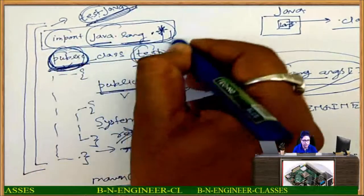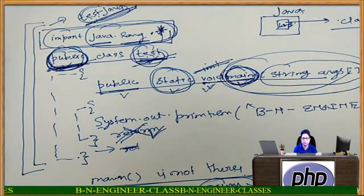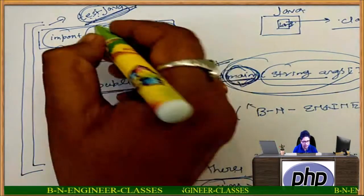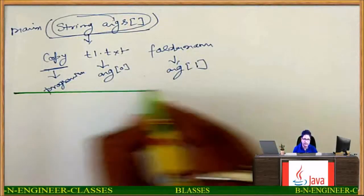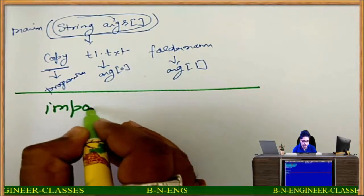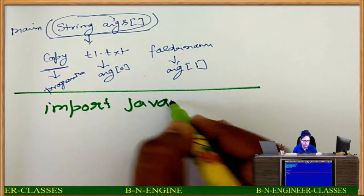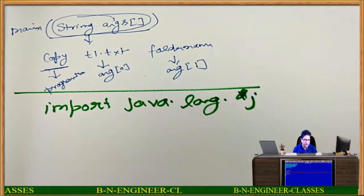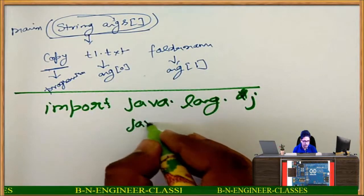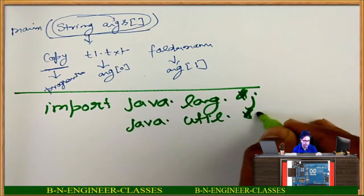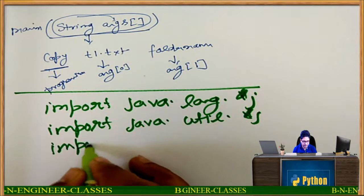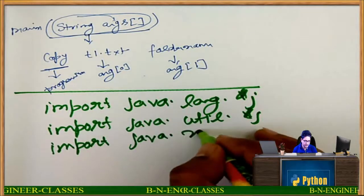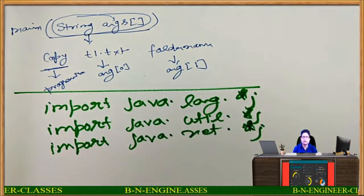Last time I told you that you have to write the statement: import java.lang.*. You can see it very easily. Other packages you can include like import java.util.* — 'import' is to be written in all. A third thing you can write is import java.net.*.